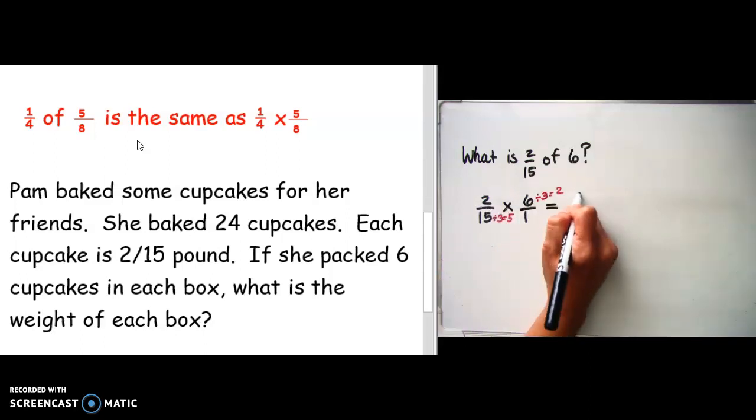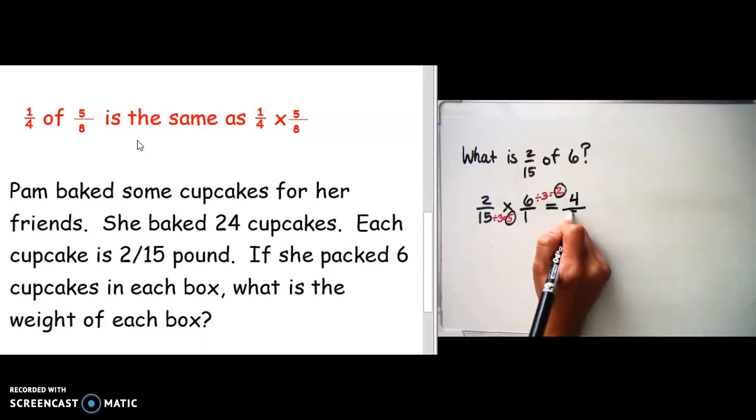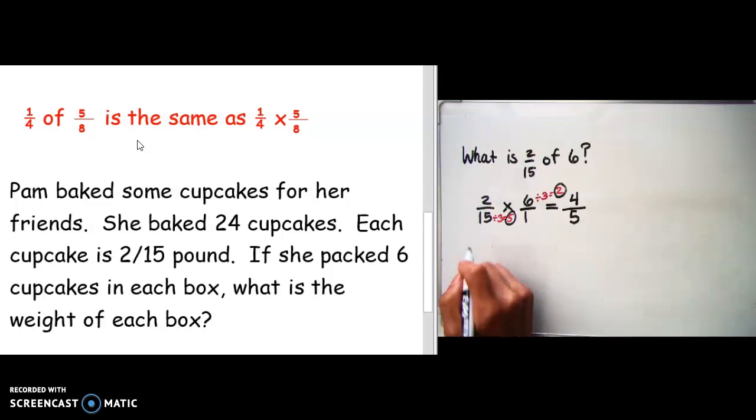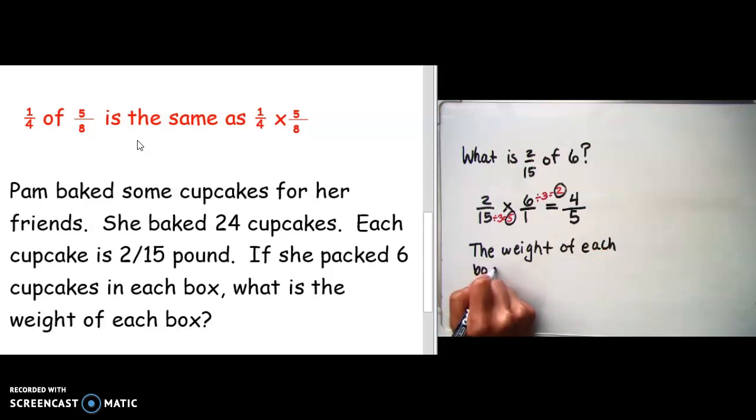Now I can multiply across. Two times two is four, and five times one is five. So the weight of each box is four-fifths pounds.